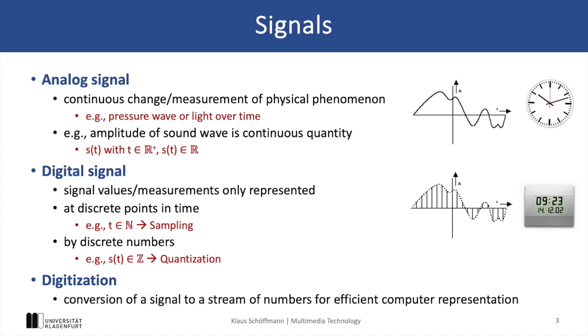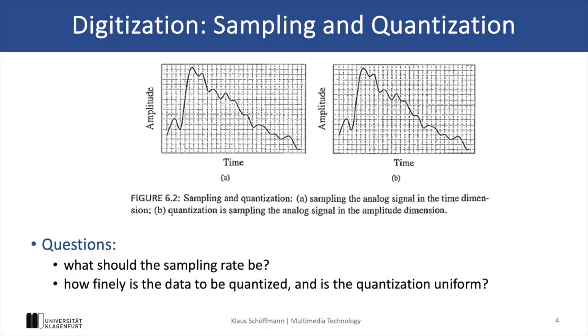And the digitization process is the conversion of the signals into a stream of numbers that are actually used for efficient computer representation. Sampling involves capturing the signals at discrete points in time, while quantization maps these values into discrete amplitude levels. And we can see this here in this figure.